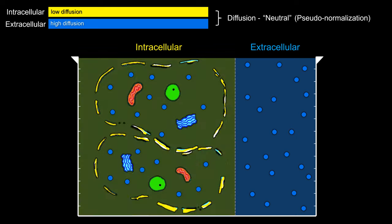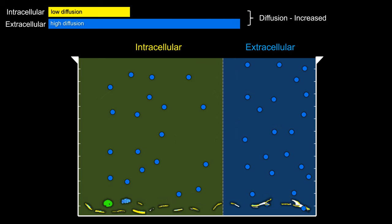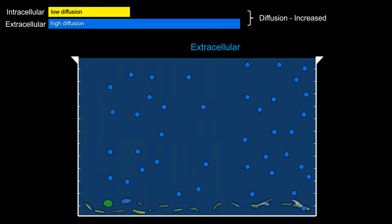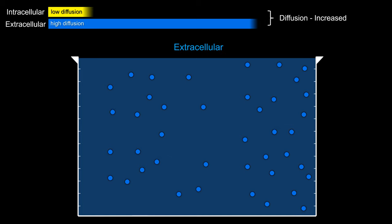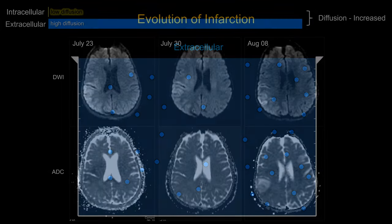As the cells begin to lyse, they release intracellular water back into the extracellular compartment, so you begin to have increased diffusion on average. Eventually, as the cells completely lyse away, the entire sample is comprised only of extracellular compartment. Now there is no restricted diffusion compared to adjacent normal tissue — in fact, the sample has increased or facilitated diffusion.